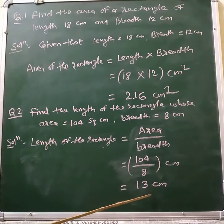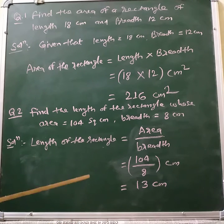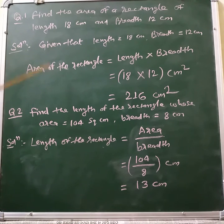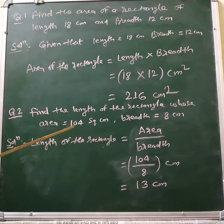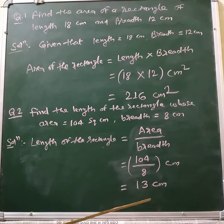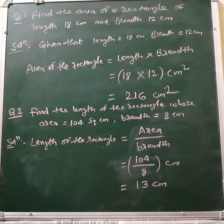So length of the rectangle is equal to 13 centimeters. In this way you can find out the area of a rectangle if length and breadth are given, and the length of a rectangle if the area and breadth are given. If you have any questions you can comment in the comment box. Enjoy learning!